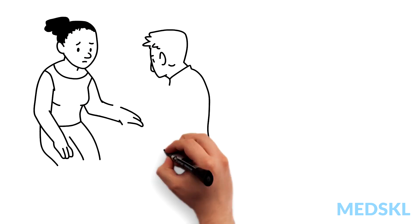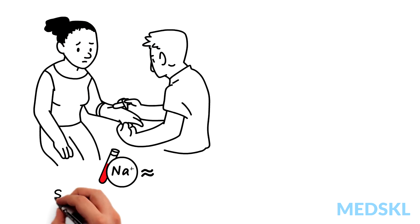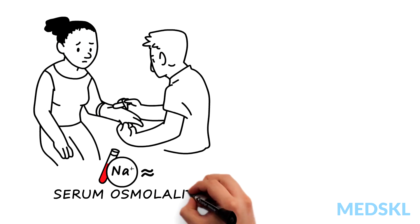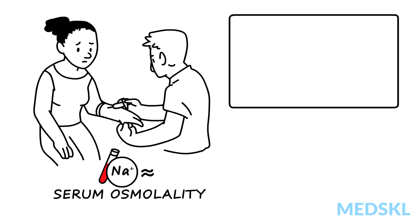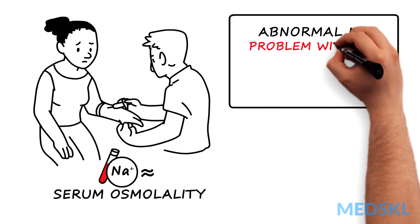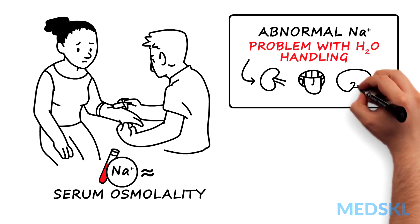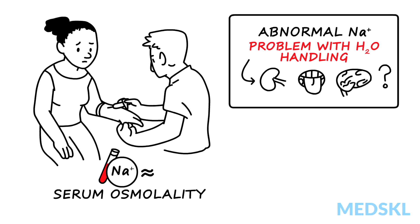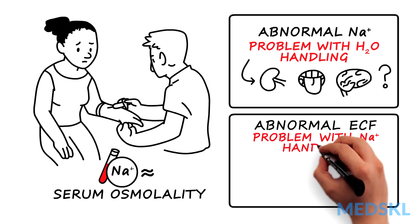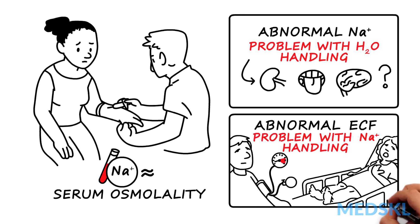Let's begin with the basics. Measured plasma sodium is a cheap substitute for serum osmolality. The one golden rule you must remember is that if the plasma sodium level is abnormal, it usually means there is a problem with osmolality, and hence with water handling, not sodium handling. If the patient has abnormal ECF volume, then there is a problem with sodium handling.